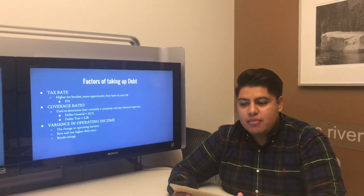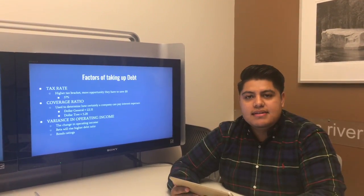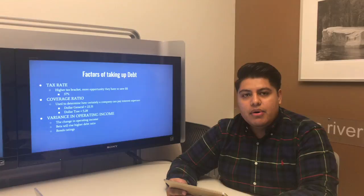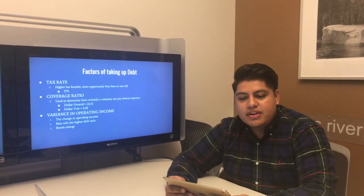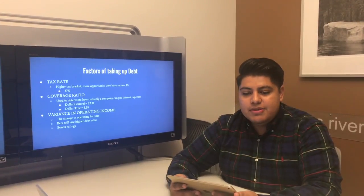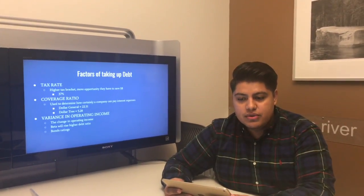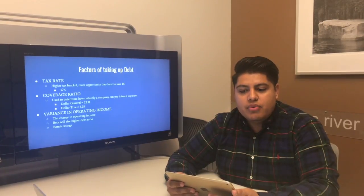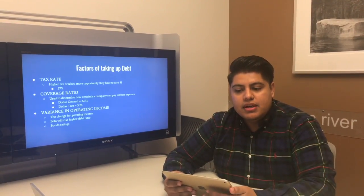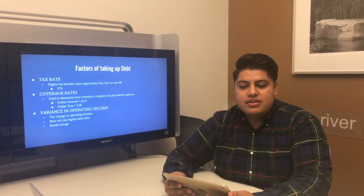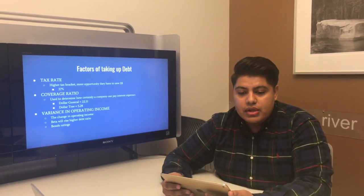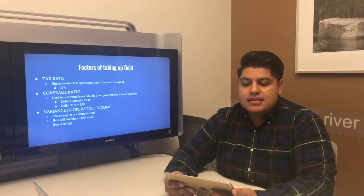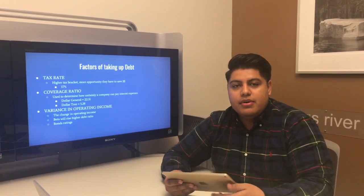Regarding tax rate: when the company is in a higher tax bracket, there is more opportunity to benefit from debt financing. The higher the tax rate, the higher the optimal debt level will be, resulting in higher savings from tax deductions. Both Dollar General and Dollar Tree are in the 37% tax bracket for 2016. For the ability to pay interest, the interest coverage ratio is used to determine how reliably a company can pay its interest expense. The industry average is 27.4; Dollar General is at 22.31, down 0.92 from the previous year. Dollar Tree is at 5.2, up from 2.09 the prior year, but Dollar General carries significantly less debt overall.